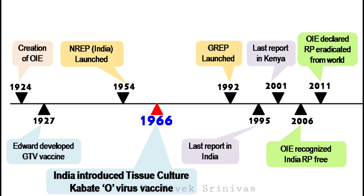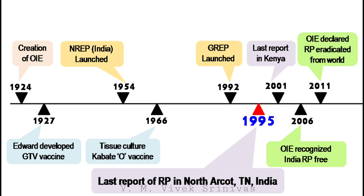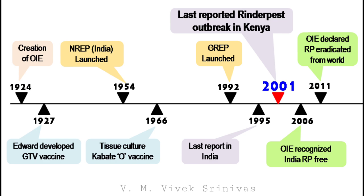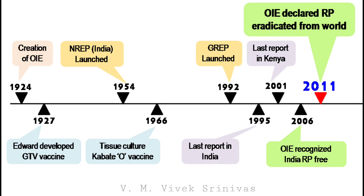In 1966, India introduced the tissue culture Cobb-8 O virus vaccine, which was used for Rinderpest eradication. In 1992, the Global Rinderpest Eradication Program was launched by FAO, with the main objective of eliminating Rinderpest from the world by 2010. In 1995, the last report of Rinderpest in India was recorded at North Arcot, Tamil Nadu. In 2001, the last reported outbreak was in one buffalo in Kenya. In 2006, OIE recognized India as free from Rinderpest. In 2011, OIE declared Rinderpest eradicated from the world.